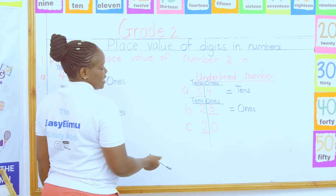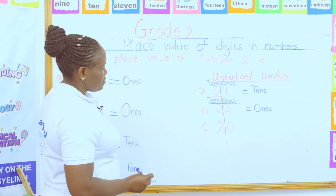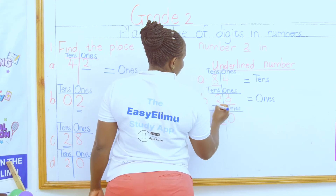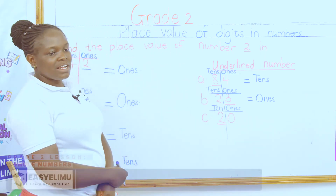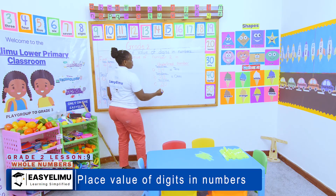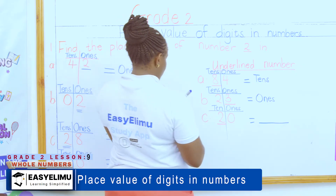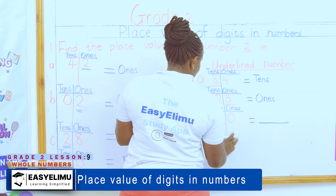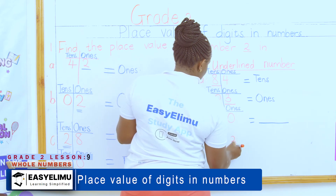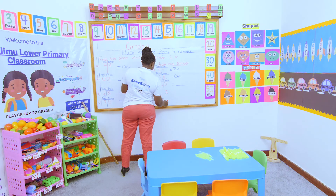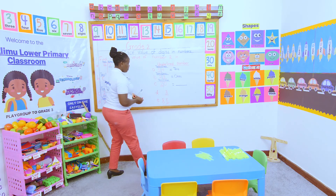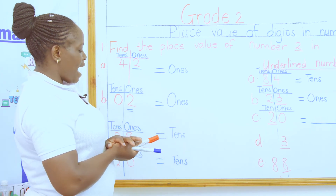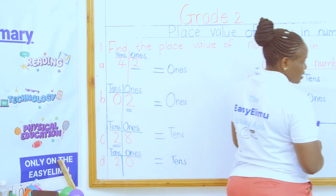Find the place value of the underlined number — the underlined number in part C is two. We have ones and tens on the place value chart. That is part of the homework I'm going to give. We also have a number where three is the underlined number, and eighty-eight where one eight has been underlined — give the place value of that underlined number.